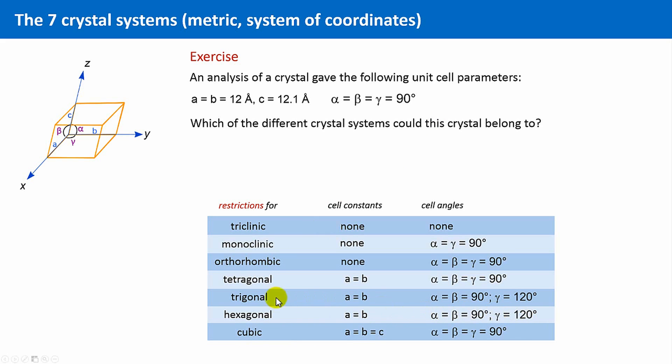So, what about the tetragonal system? Oh yes, I think that fits. A equals B, and all angles are 90 degrees.